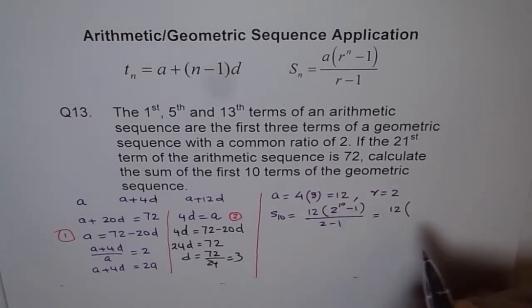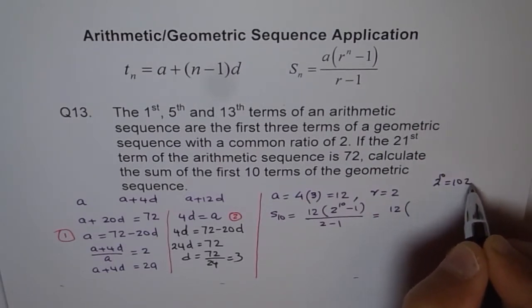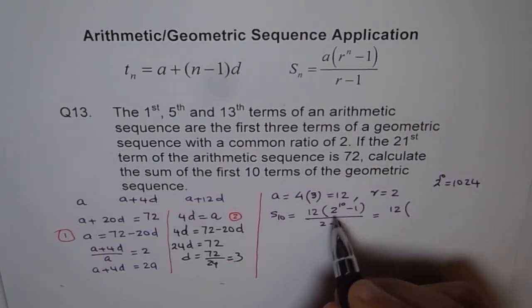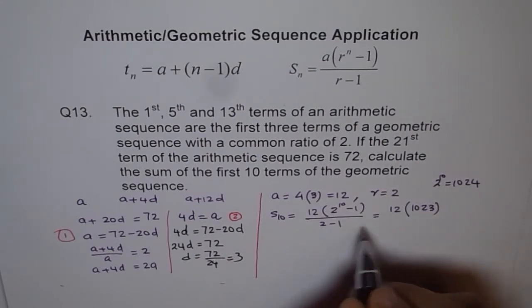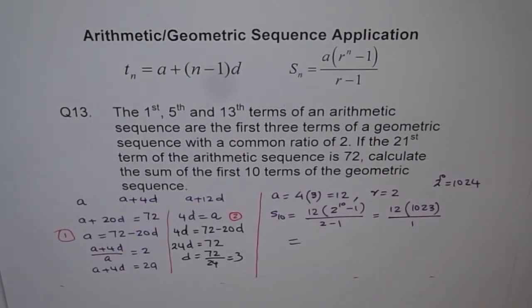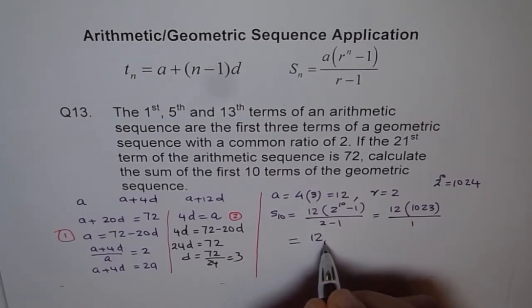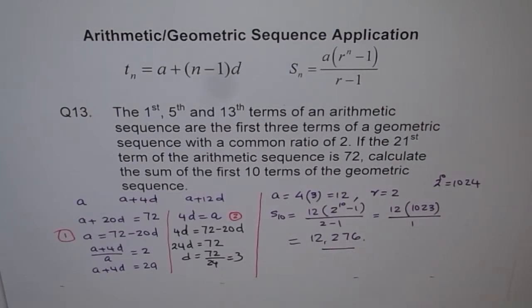2 to the power of 10 is 1024. So 1024 minus 1 is 1023, divided by 2 minus 1 which is just 1. Therefore the answer is 12 times 1023, which equals 12,276. That is the sum of the first 10 terms of the geometric sequence.